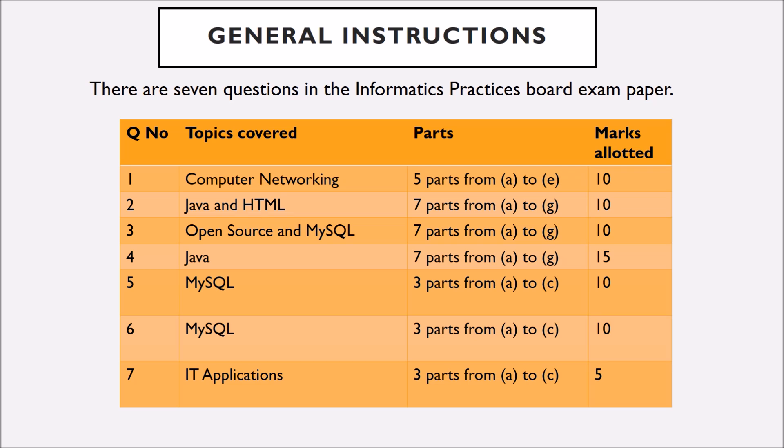Question number two is based on the topics Java and HTML. It has seven parts from A to G and is of 10 marks. Question number three is based on the topics open source concepts and MySQL. It has seven parts from A to G and is of 10 marks.